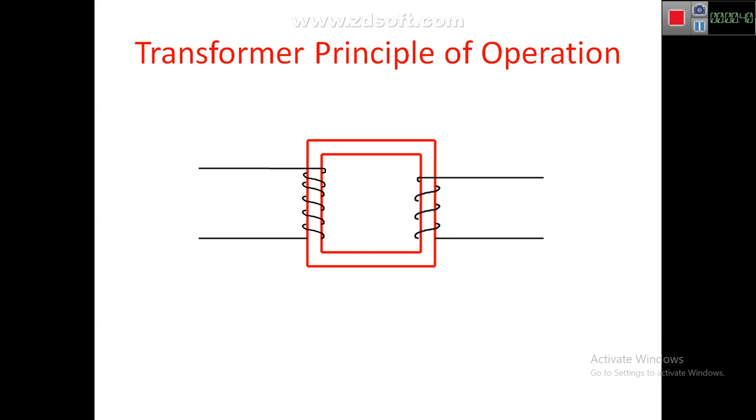The winding which is connected to load is called the secondary winding. That means one winding is given to the supply and one winding is given to the load. This is a two-winding transformer. There may be many windings also. Here the first winding has N1 turns, the second winding has N2 turns.